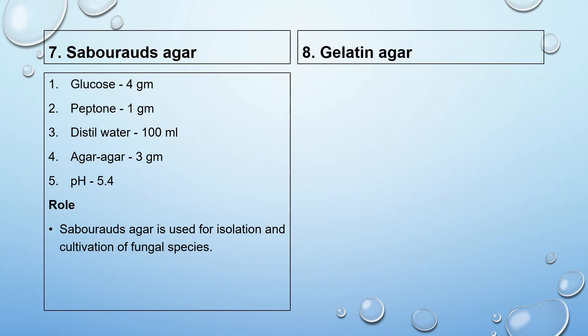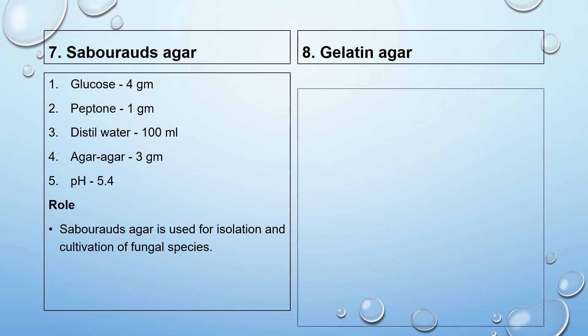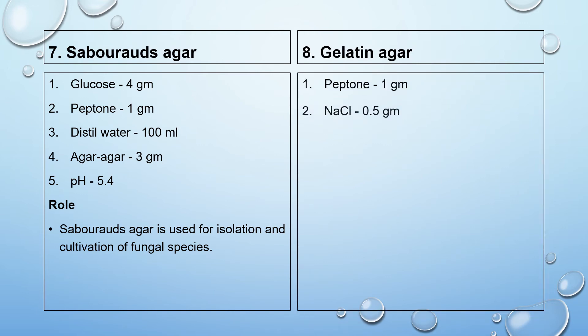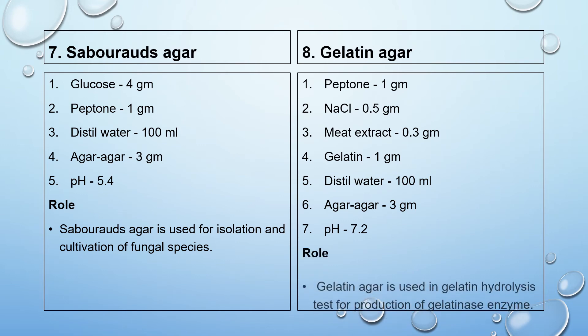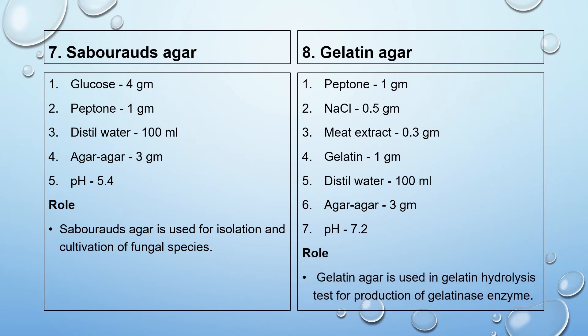The eighth media is gelatin agar. Composition: peptone 1 gram, NaCl 0.5 gram, meat extract 0.3 gram, gelatin 1 gram, distilled water 100 ml, agar agar 3 gram, pH 7.2. Gelatin agar is used in the gelatin hydrolysis test for production of the gelatinase enzyme.